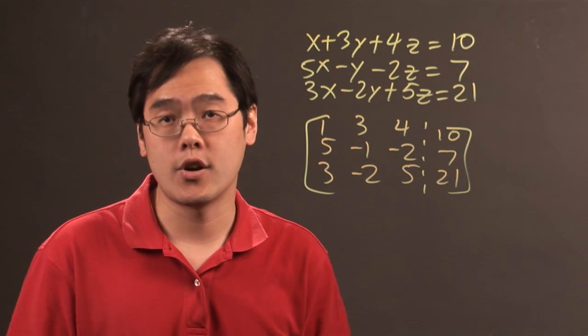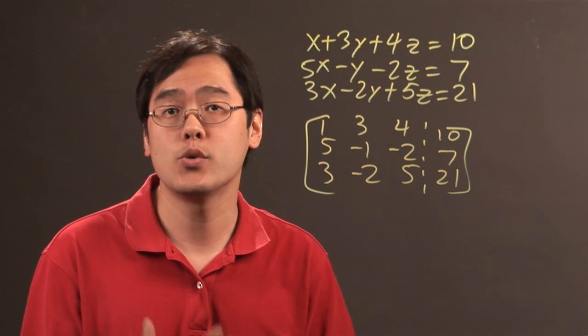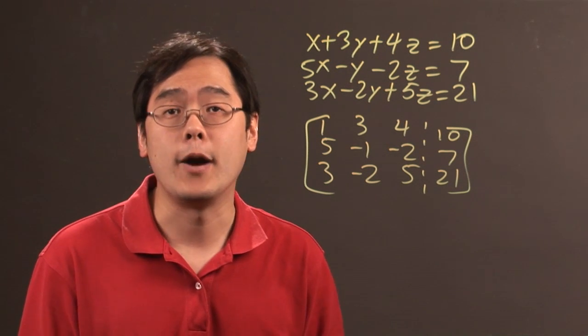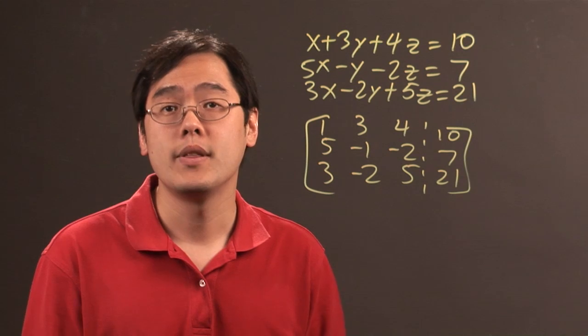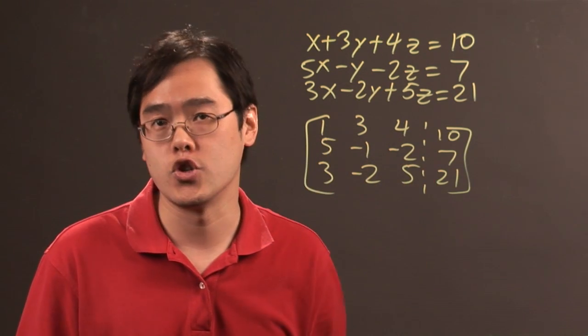Now the methods that are used are Gaussian elimination or Gauss-Jordan elimination. It all depends on what kind of form that you're looking for. Now with row echelon form that's where the Gaussian elimination comes in where you use the order of the elementary row operations to get to what you want.